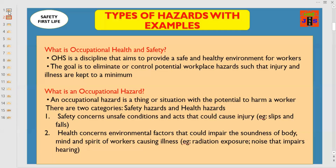Now, let us look at what is an occupational hazard. An occupational hazard is a thing or a situation with the potential to harm a worker. But there are two categories: safety hazards and health hazards.